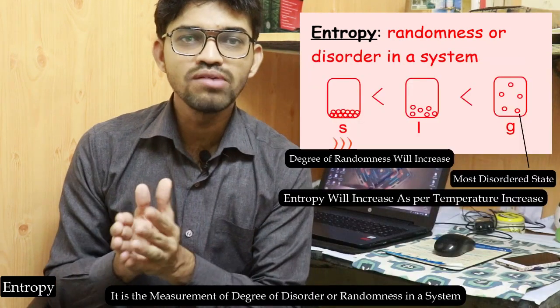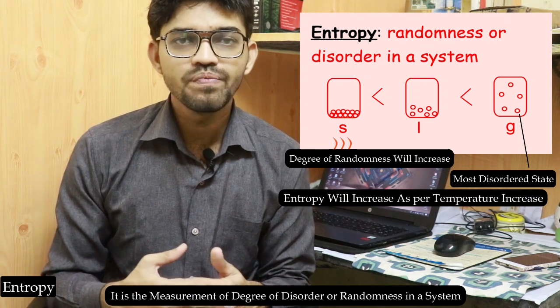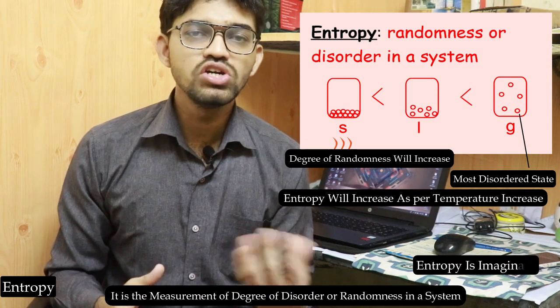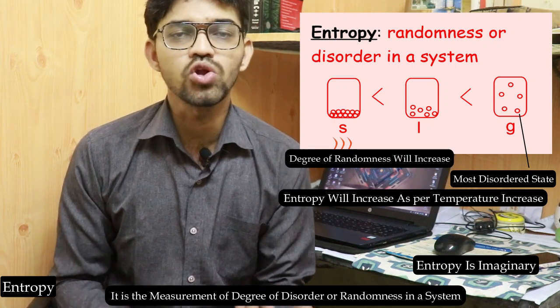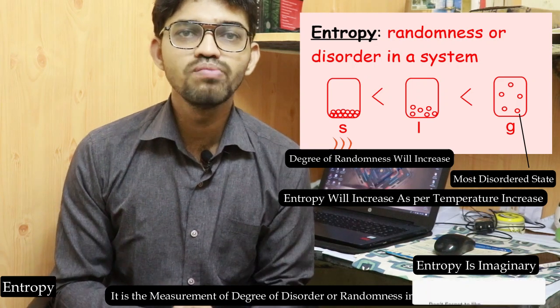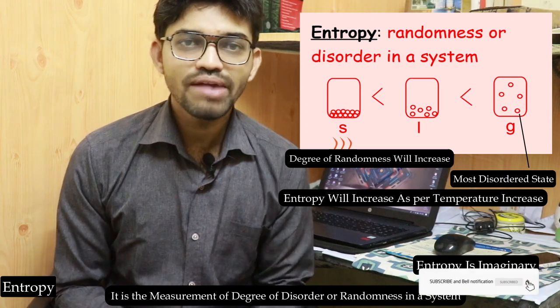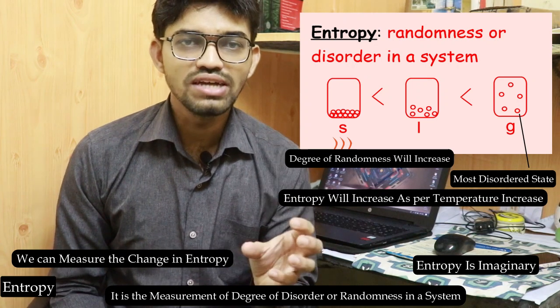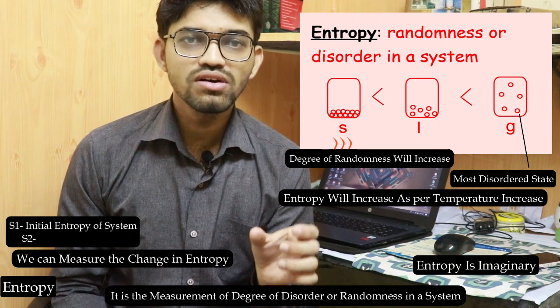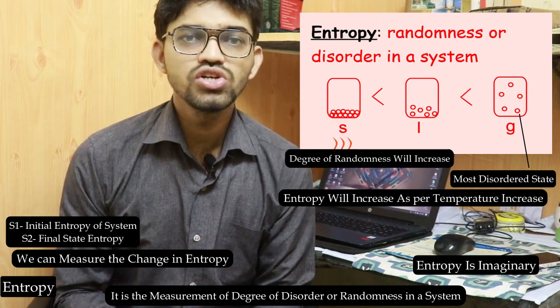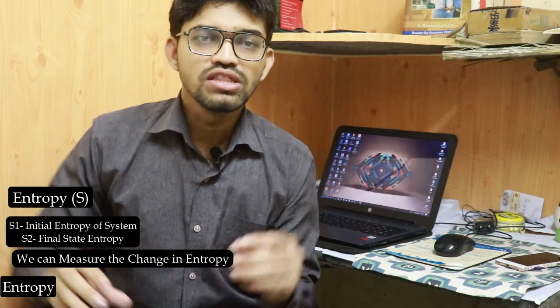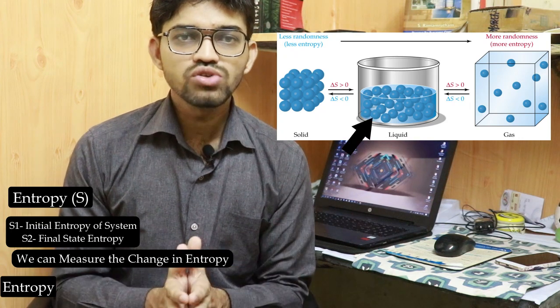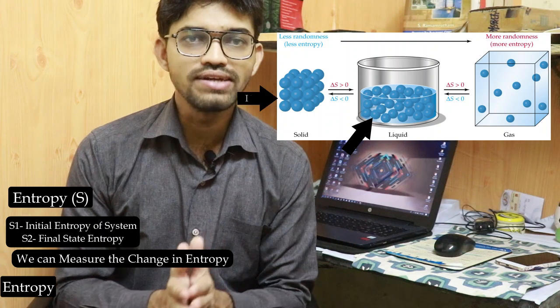Entropy is the degree of randomness, but we cannot directly measure it because a given matter consists of millions of atoms and molecules, making it nearly impossible to measure randomness directly. However, we can measure the change in entropy — from an initial state S1 to a final state S2. Entropy is denoted by the letter S, and because it depends on the state of the system, it is a state function.